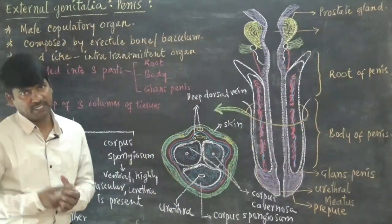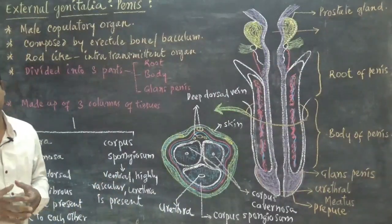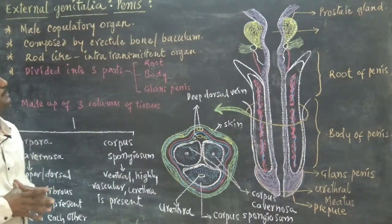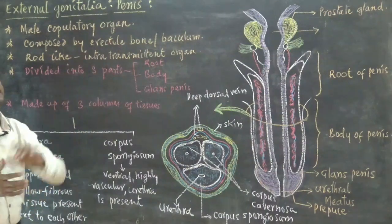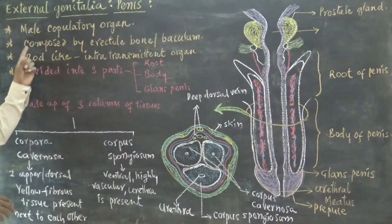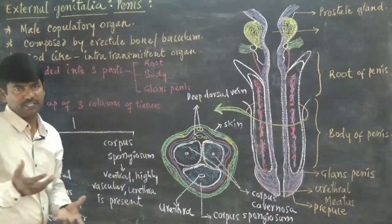External genitalia of male. The external genitalia of male is composed of specific structures called penis. Penis is considered as the male copulatory organ.